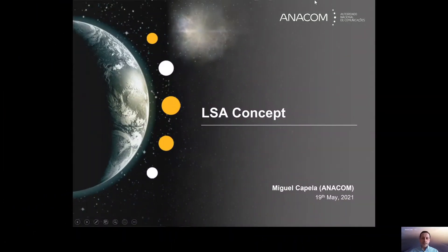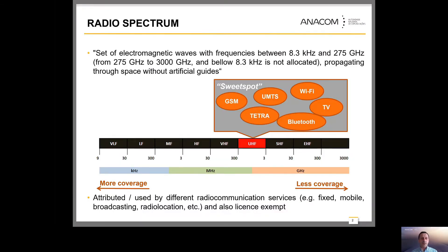Before I start speaking about the LSA concept, I will explain a little bit what is the radio spectrum. The radio spectrum is the set of electromagnetic waves with frequencies between 8.3 kHz and 275 GHz. This spectrum is allocated by ITU and attributed to different radio communication services like fixed, mobile, broadcasting, radio location, and others.